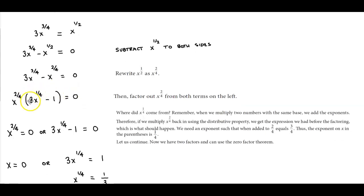Now what that allows us to do is factor out x to the 2 fourths from both terms on the left. If I multiply this back through we can read this statement. It says where did the x to the 1 fourth come from here? Remember that when we multiply two numbers with the same base, we add the exponents. Therefore if we multiply back x to the 2 fourths and using the distributive property,